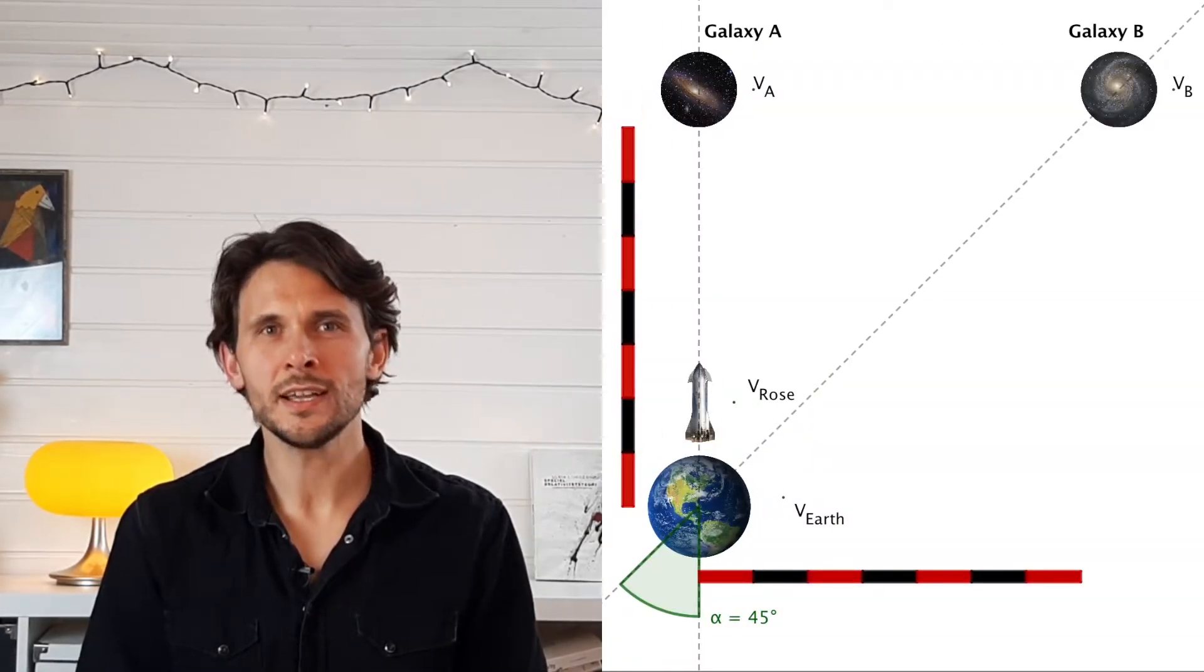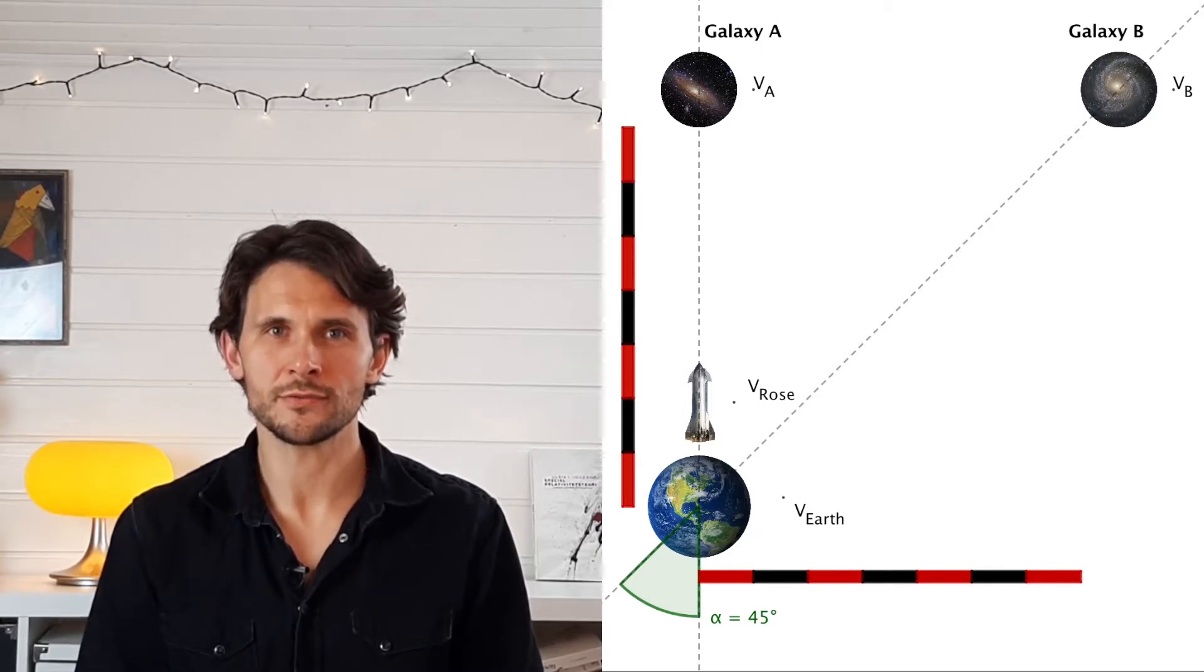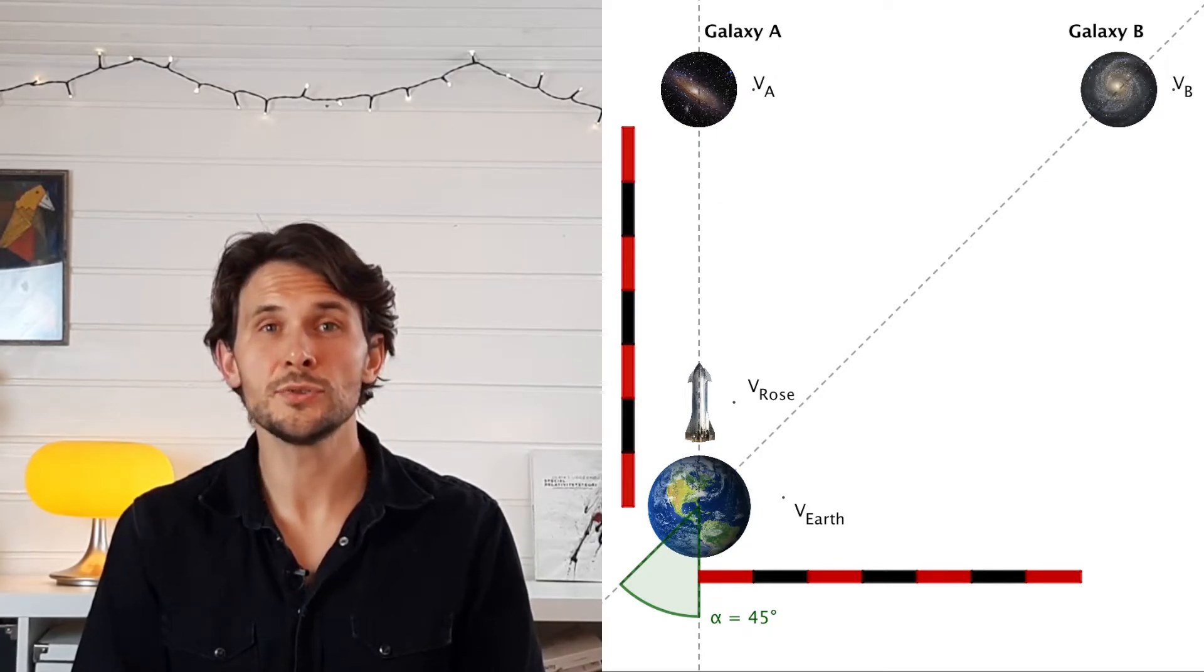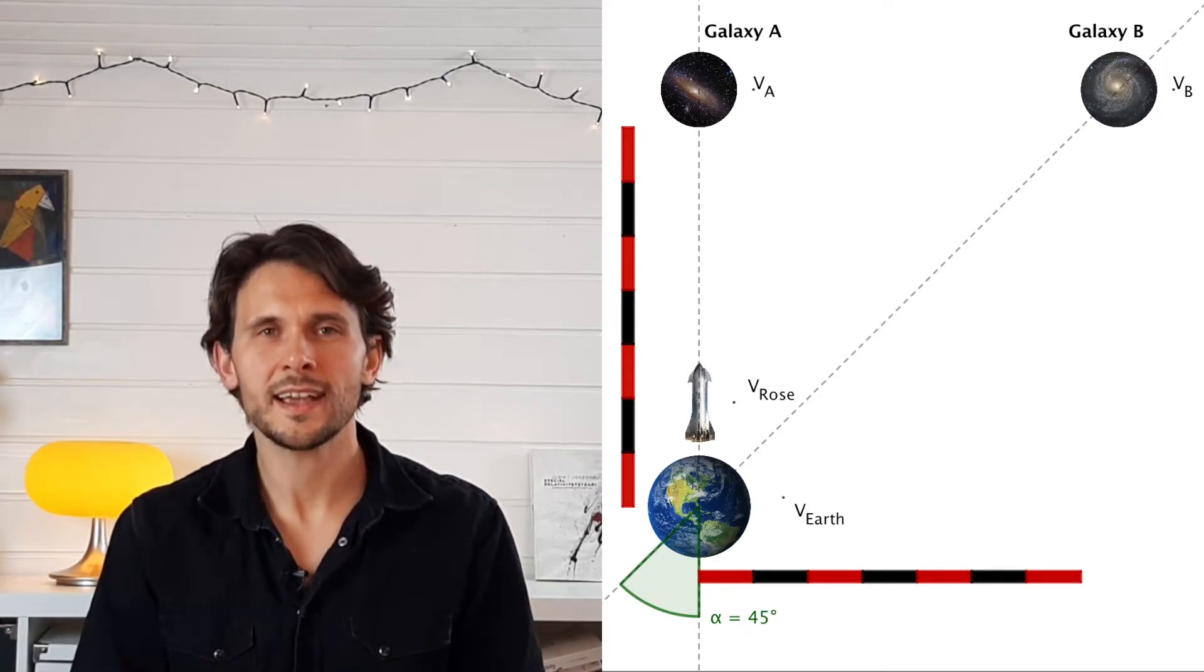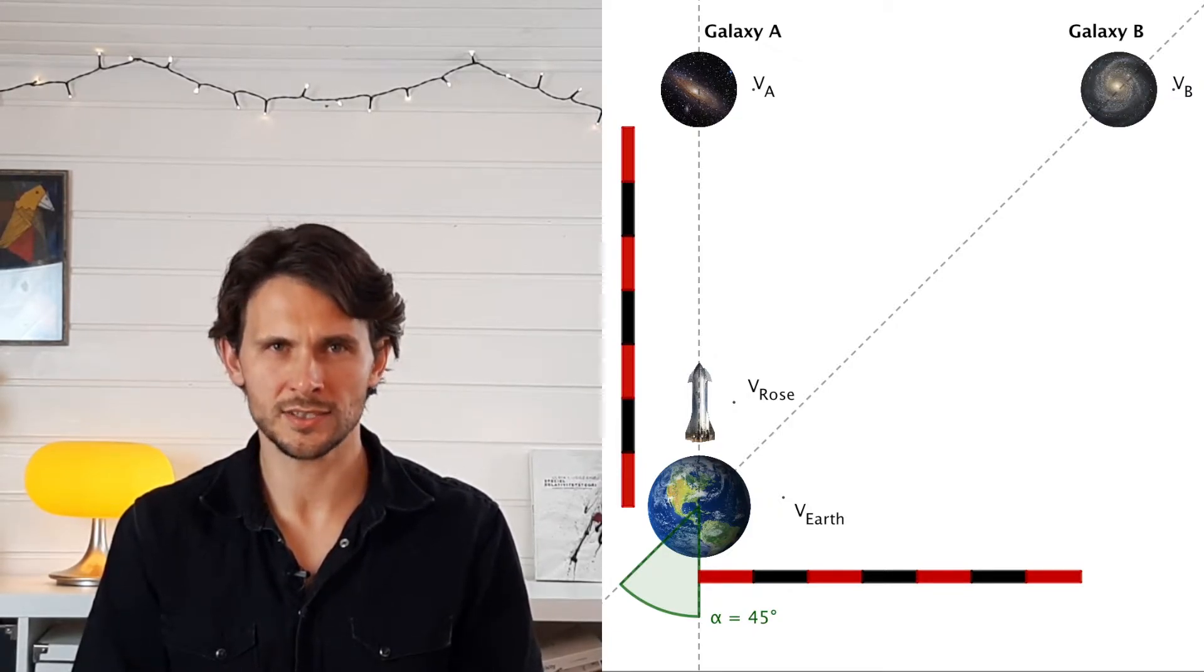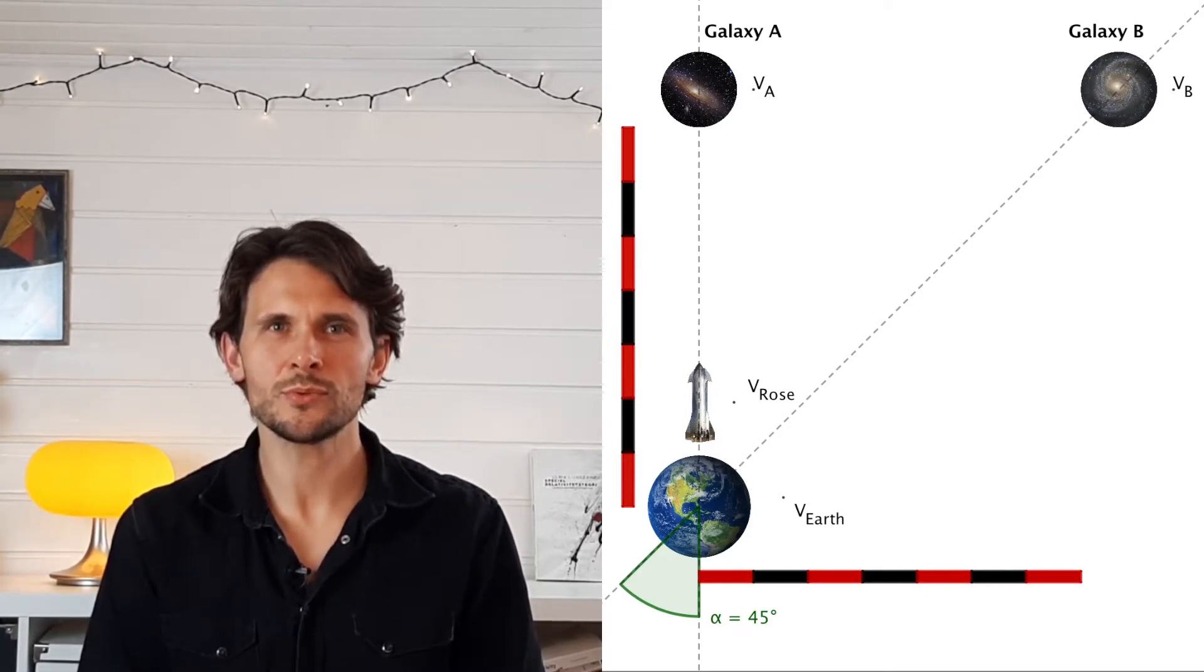Let's now try to get a better understanding of why this rotation occurs through the following case. A girl named Rose finds Mother Earth very boring and decides to check out one of the neighboring galaxies to see if it's more fun there. On her star map, which is drawn in the rest frame of Earth, she sees two interesting galaxies. Galaxy A is located to the north with a flight path along the vertical axis of the map and galaxy B is located to the northeast with a flight path 45 degrees to the axis. Both galaxies are at rest with respect to Earth.